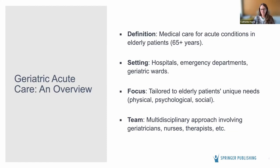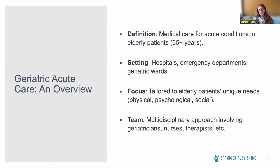So this definition of elderly patients — medical care for acute conditions in elderly patients. As I get older, this number just keeps getting closer and it doesn't seem like it's elderly anymore. There's definitely a chronologic age that defines elderly patients, but I also think there is a degree of frailty that identifies them. There's a lot of 65-year-old patients who are healthier than some 45-year-old patients. The more frail somebody is, the more susceptible they will be to the conditions we're going to talk about.